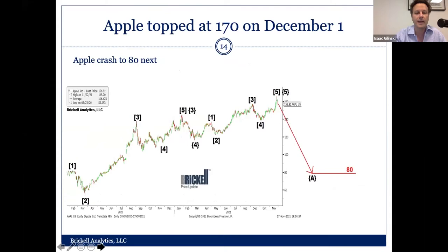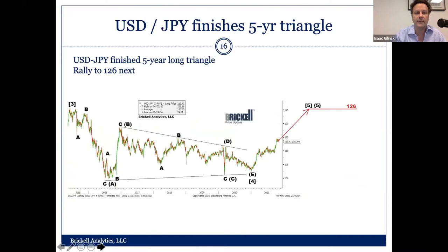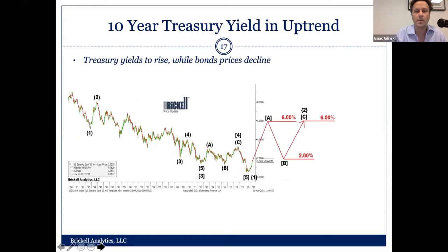In terms of rates and FX, dollar-yen is finishing a very long triangle pattern since 2015. This is a bullish triangle pattern, which means dollar-yen should strengthen — dollar should strengthen, yen should weaken. It should revisit the highs of 2015, which is about 125-126 on the yen. And if the yen is going to break out higher, we have a very bearish forecast on bond prices, and we think bond yields should rise and start to surge.